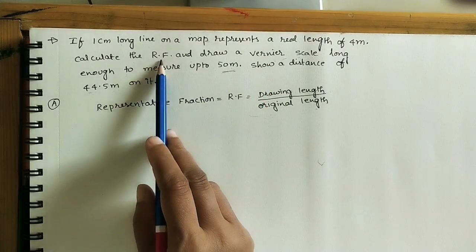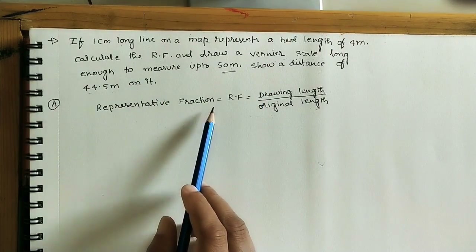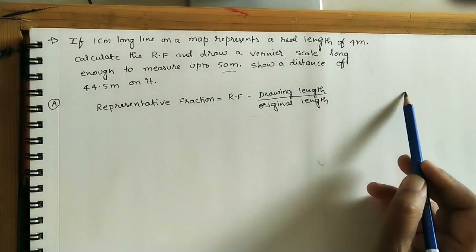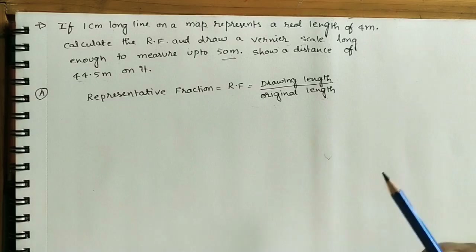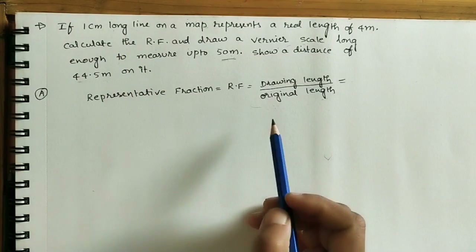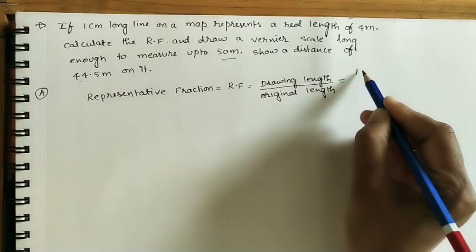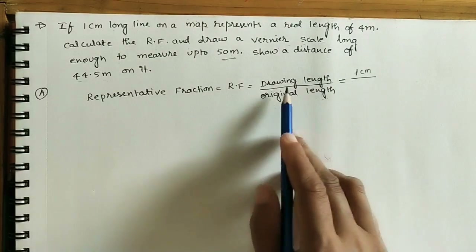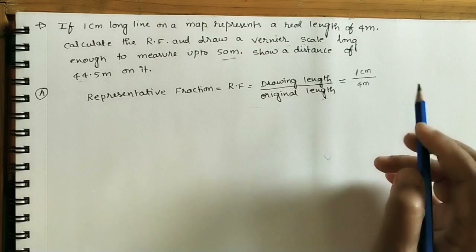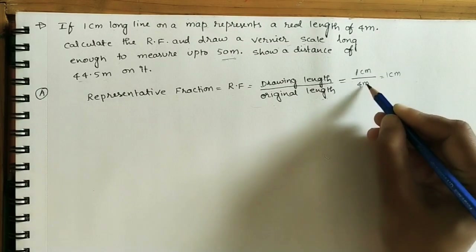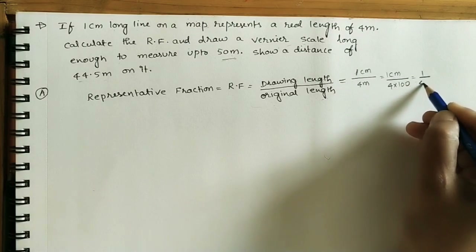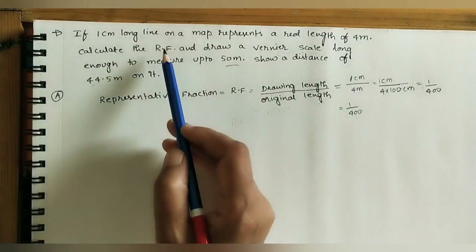First, calculate the RF value. RF means representative fraction — it is the ratio of drawing length to original length. The drawing length is one centimeter (which we can draw on the sheet), and the original length is four meters. Converting four meters to centimeters: one meter equals 100 centimeters, so four meters equals 400 centimeters. Therefore, RF = 1/400.